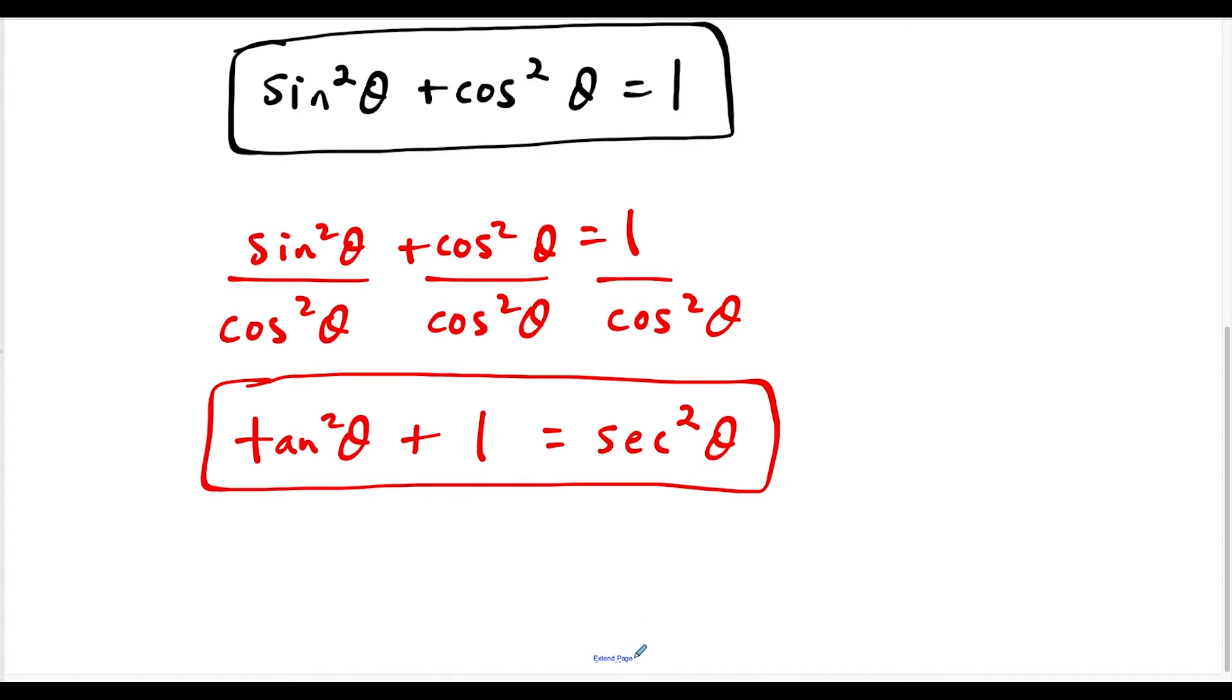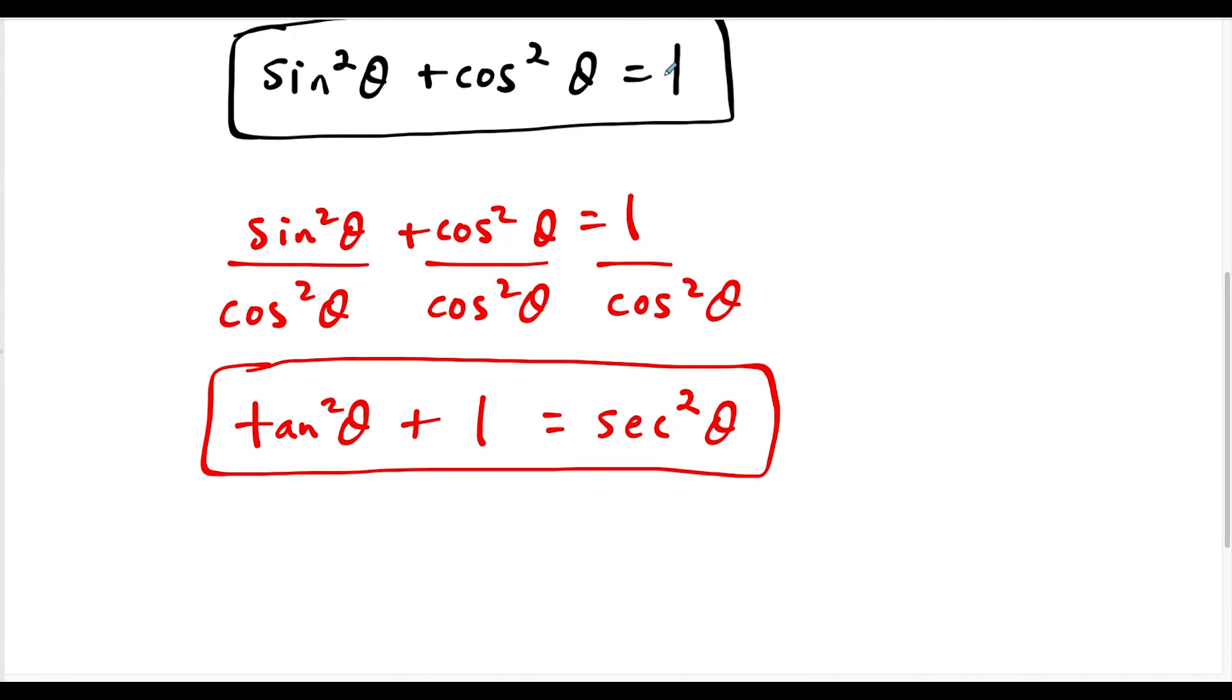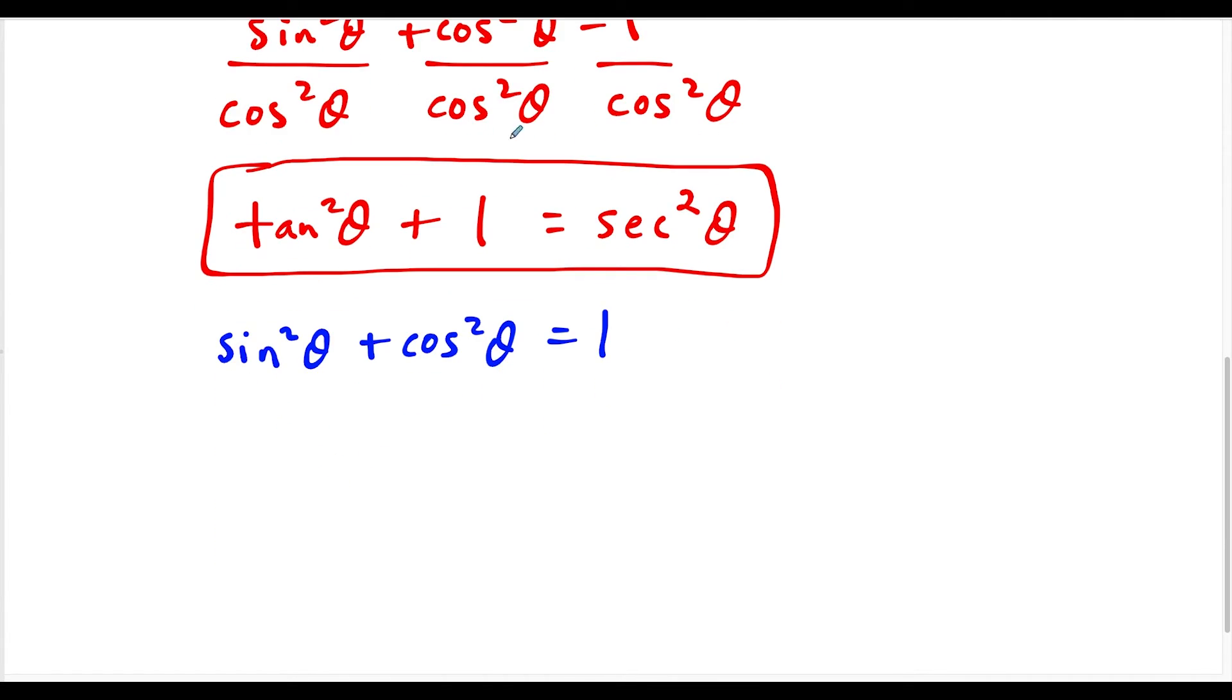But now there's one more that we could derive here. And the way that we're going to derive it is, let's say now we once again start with the original one, sine squared plus cosine squared equals one. But this time, instead of dividing by cosine squared, what if now we divide by sine squared? So we divide this entire equation, all three terms by sine squared. And when we do this, you'll see how this works out. Sine squared divided by sine squared is one, plus cosine over sine is the identity for cotangent. So this is going to become cotangent squared theta. And then one over sine theta is the identity for cosecant. So the right side is going to work out to cosecant squared theta. So this is the third formula here.